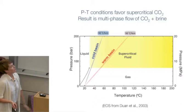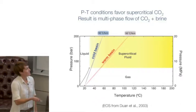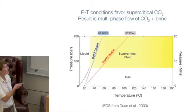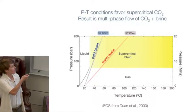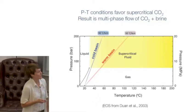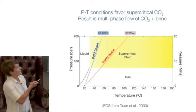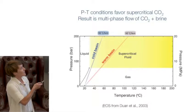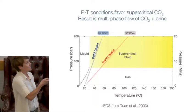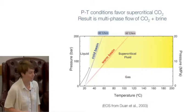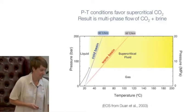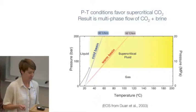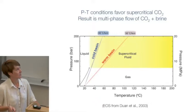What happens in these subsurface storage reservoirs? This phase diagram for CO2 shows pressure and temperature. The black line shows the critical point for CO2, and the geothermal gradient shows the change in temperature with depth into the Earth's crust. Most places where we plan to inject CO2 are within the range where CO2 is a supercritical fluid. We have both supercritical fluid and brine down in these environments, which creates some interesting conditions for storage.